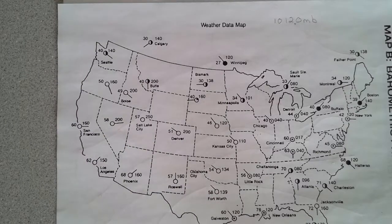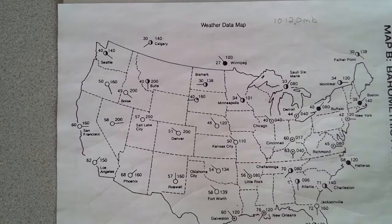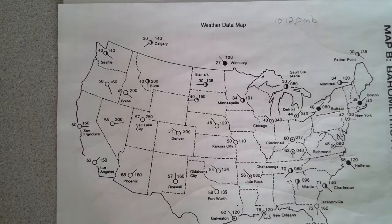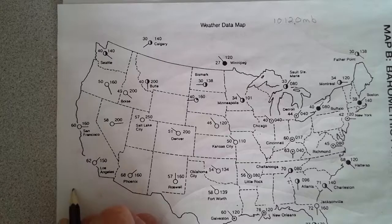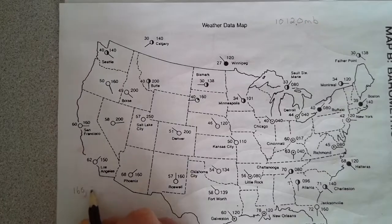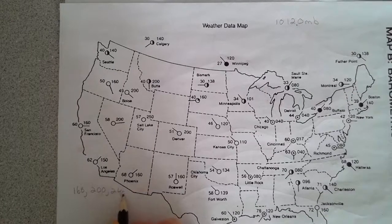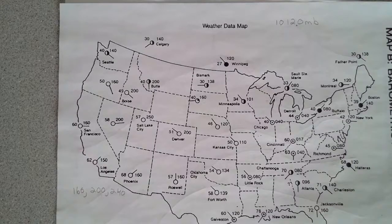Take your highlighter and highlight everywhere where you see 160. I can see some here and here, and there's one other one right here. As you can see, I'm starting to see somewhat of a circular pattern. So the next thing you have to do is draw your isobar, which is a line of equal barometric pressure. Connect the 160 readings.